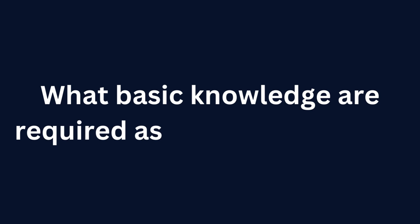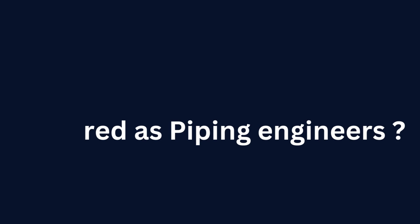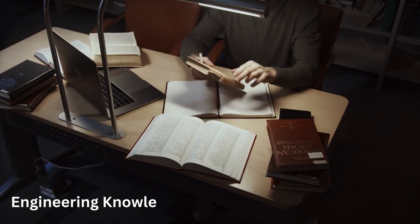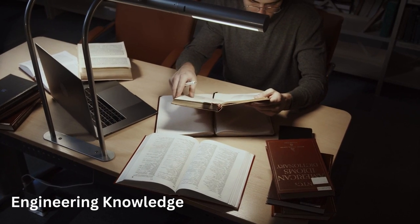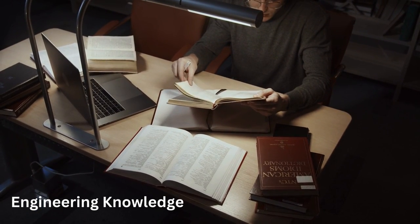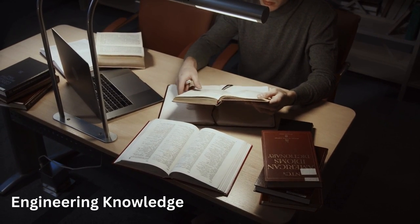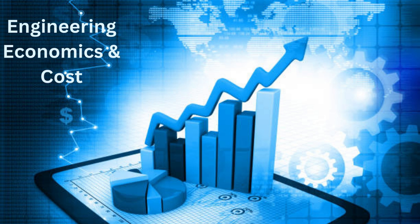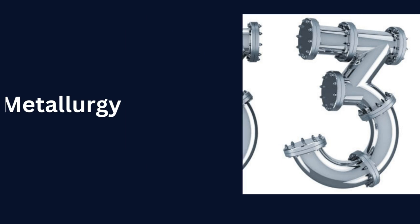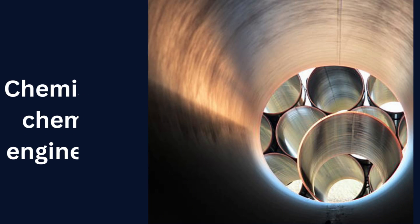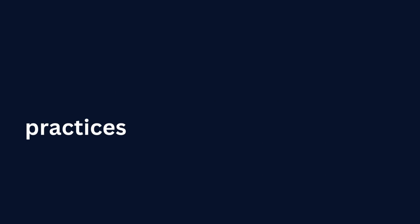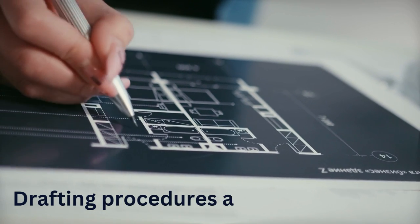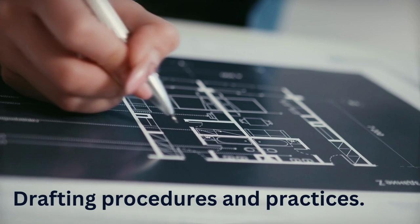As a piping design engineer, let's see what basic knowledge is required — and we will learn each of these points in our course. 1. Basic Engineering Knowledge, which includes a combination of mechanical engineering, chemical engineering, electrical engineering, instrumentation engineering, and civil engineering. 2. Engineering Economics and Cost. 3. Metallurgy. 4. Methods of Pipe Fabrication and Erection. 5. Chemistry and Chemical Engineering. 6. Standards and Codes Practices. 7. Safety Codes and Practices. 8. Drafting Procedures and Practices. 9. Communication Skills.